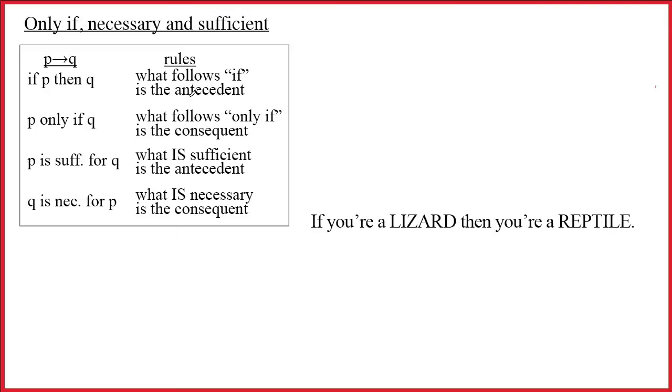So in class, we pointed out that every arrow, every P arrow Q, can be read in four equivalent ways: if P then Q, P only if Q, P is sufficient for Q, and Q is necessary for P. The claim is that all four of these expressions mean the same thing in terms of their logical significance.